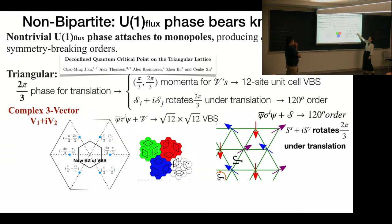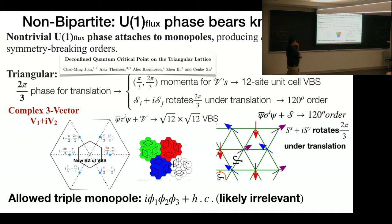So for this 120-degree order, if you write the order parameter as Sx + iSy, then this order parameter actually exactly rotates 2π/3 under translation, which is consistent with the monopole quantum number.